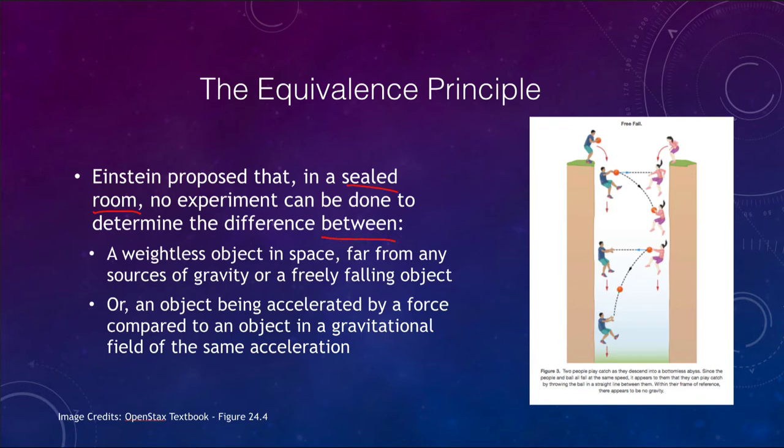That means if you are in a sealed room unable to see out, you cannot tell the difference between being a weightless object in space or a freely falling object. That's what is pictured here: if you have two people in free fall in this bottomless well, they can throw a ball back and forth. To them, it looks like they can throw it right back and forth to each other as they fall.